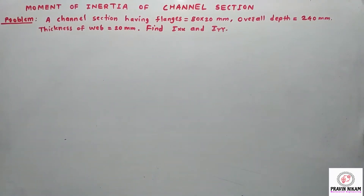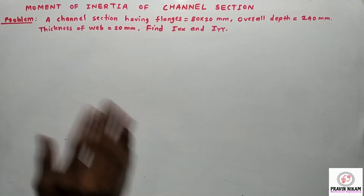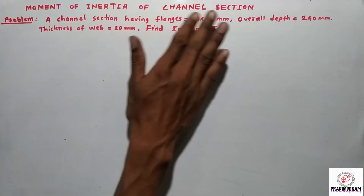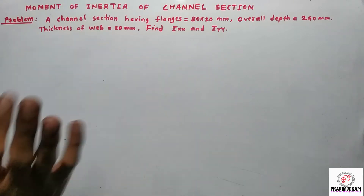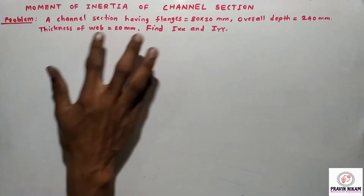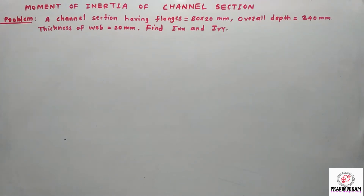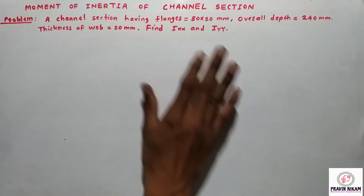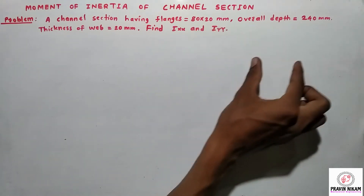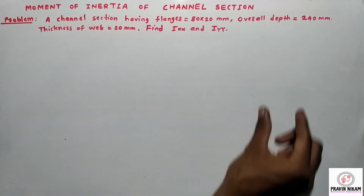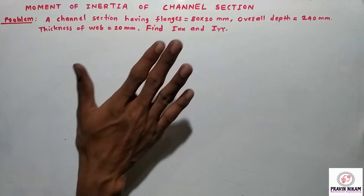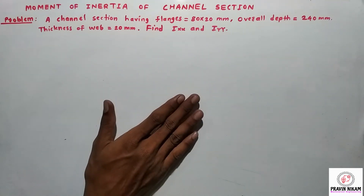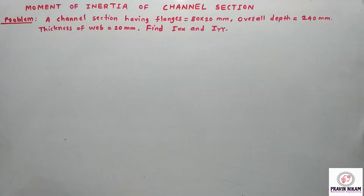Hello friends. In the previous video we solved one problem based on moment of inertia of an angle section. Now in this video I am going to solve one problem based on moment of inertia of a channel section or C-section. The channel section has flanges 80 into 20 mm, overall depth 240 mm, and thickness of web is 20 mm. Find Ixx and Iyy, that is moment of inertia about the x-axis and y-axis. Now let us draw the diagram first.